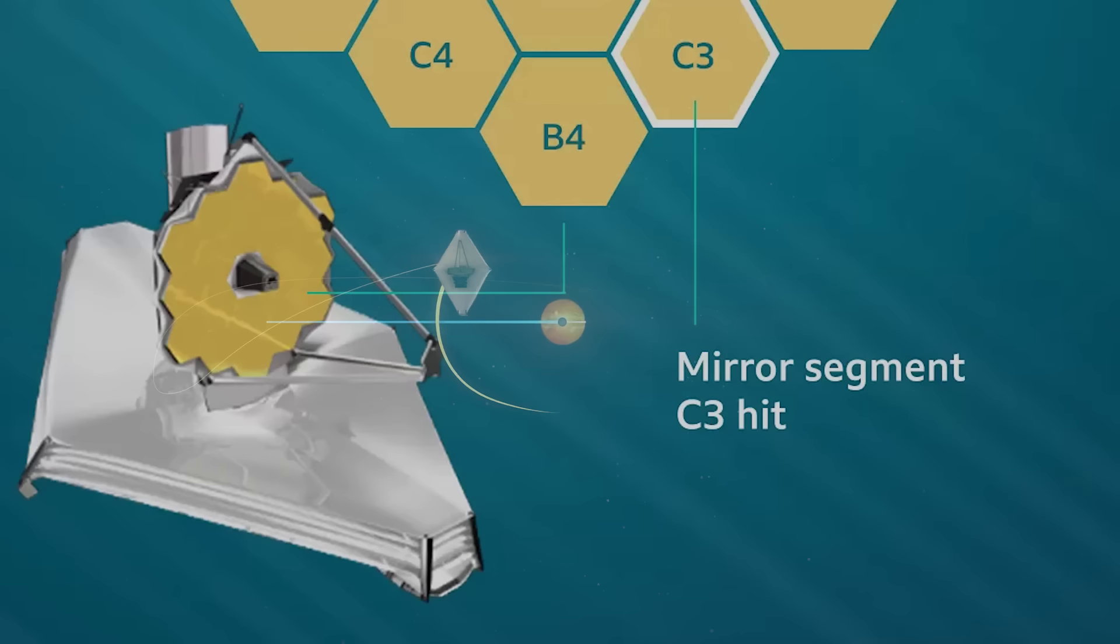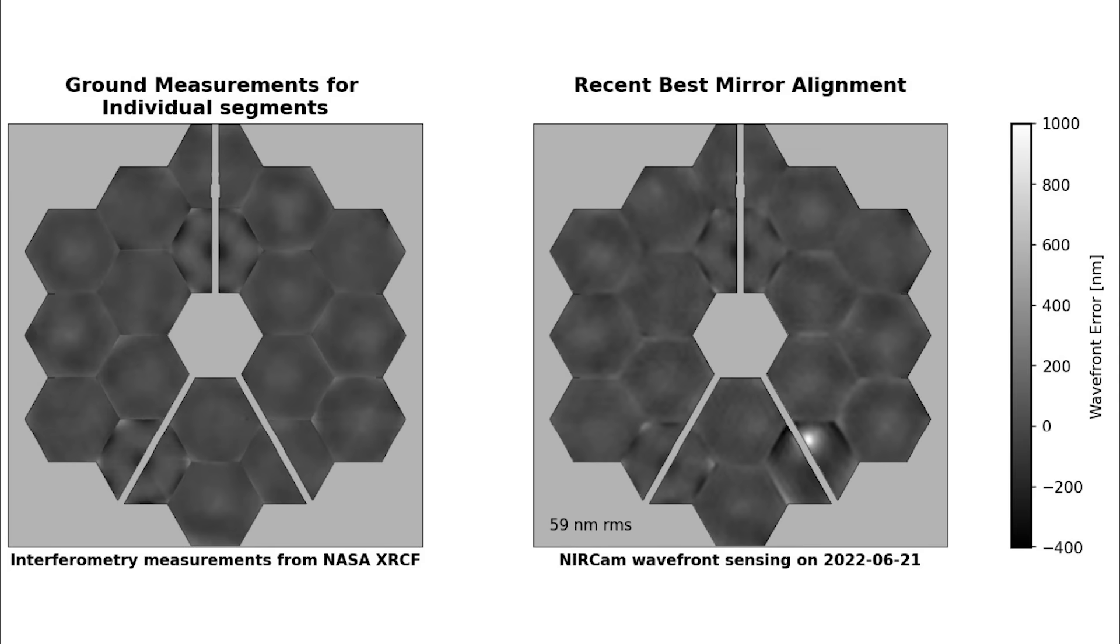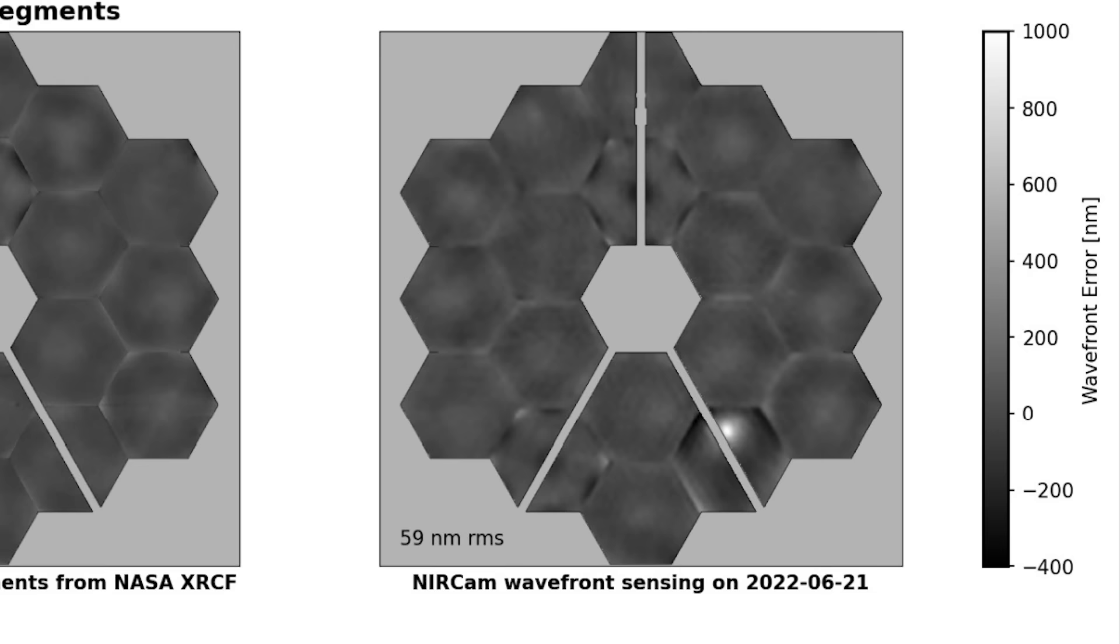In May of 2022, a micrometeorite hit one of the 18 gold mirrors, permanently damaging it. But experts say the effect on the telescope's performance will be minimal. These kinds of impacts were expected, but the damage was far larger than anticipated. And also, this type of collision was only expected once every few years.